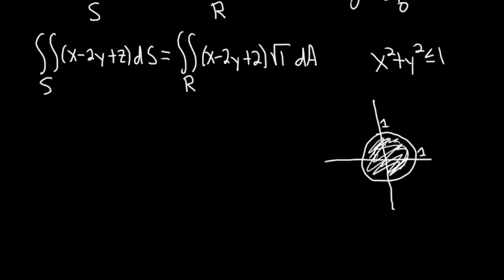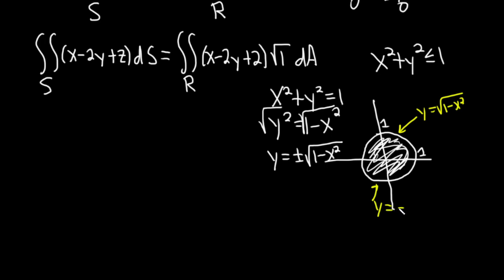So to describe this disk using x and y coordinates, what we can do is we can think about the unit circle. And we can solve for y. So if we subtract x squared, we get y squared equals 1 minus x squared. And then when you take the square root, because you're taking the square root of a variable squared, you get a plus or minus. So this is plus or minus the square root of 1 minus x squared. And so we can describe this circle. So y is the top half of the unit circle, and here y equals negative square root of 1 minus x squared is the bottom half.